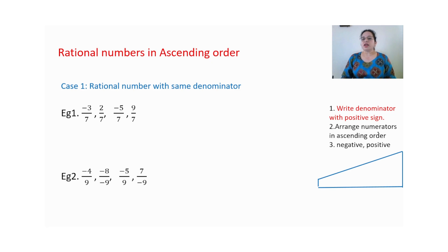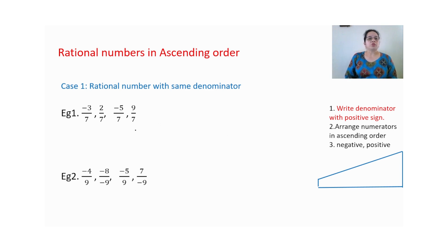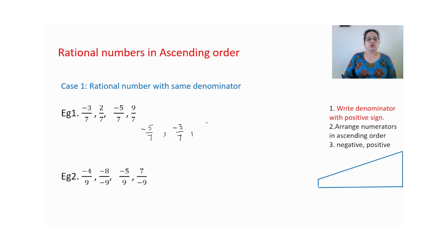We check the denominator — ascending order means smaller to greater. For positive and negative numbers, negative numbers are smaller in ascending order, so negative numbers come first. Our answer will be minus 5 by 7, then minus 3 by 7. After negative numbers, we arrange the positive numbers.